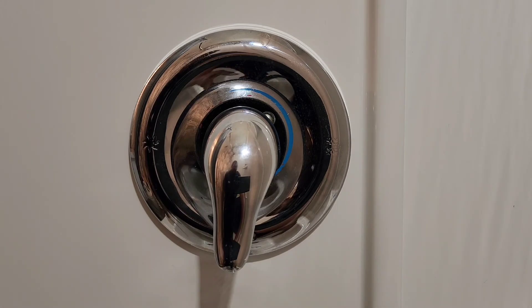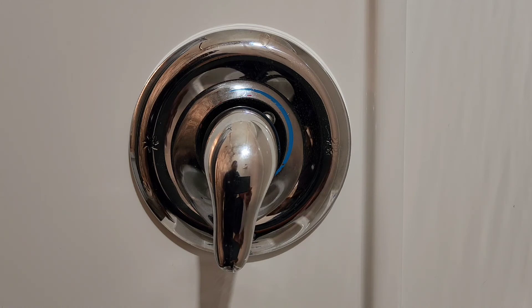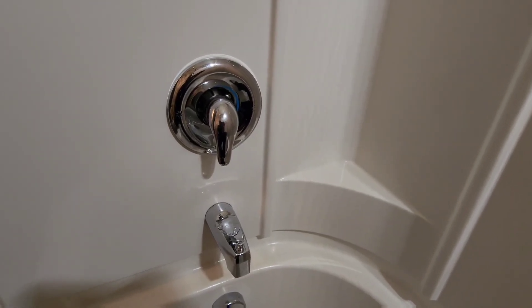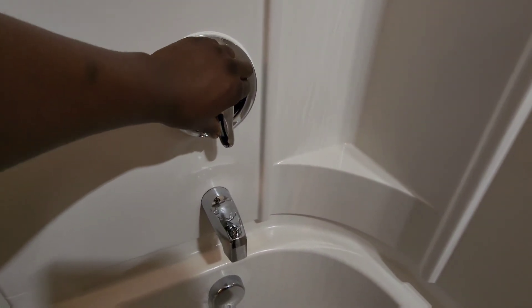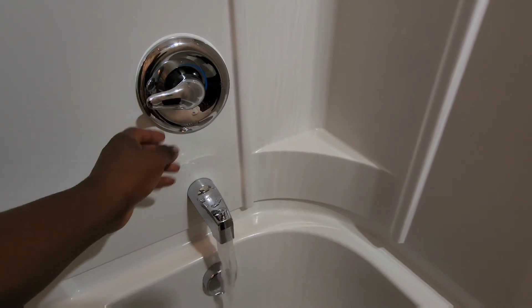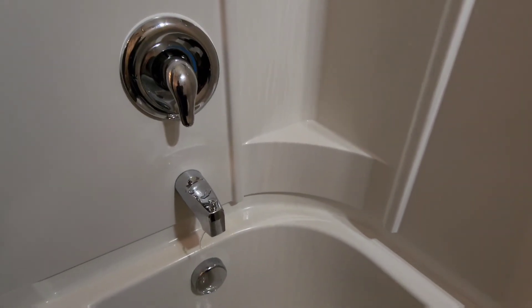Alright guys, so everything's put together and now we're fixing to go downstairs and turn the main shutoff valve on to let water back into the house and hopefully it's fixed. Let's see. Alright guys, so moment of truth, let's see if it's going to work. I think the water's on now. Let's see. And there we go. It is fixed. And that is how you change a Moen 1222 cartridge.